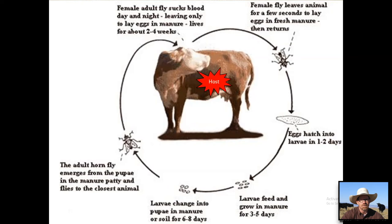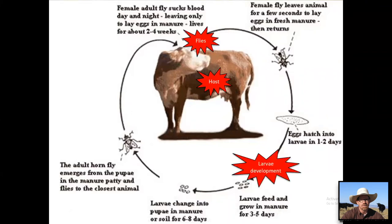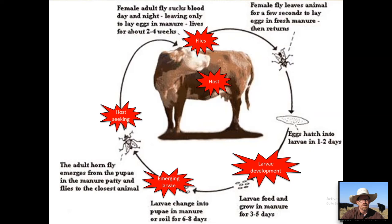Ultimately the adults emerge, fly around, and seek out another cow to take blood meals from. We can disrupt this relationship at different points along the life cycle: we can do things to the host, to flies when they're on the animal, to larvae in the cow pies, when they're emerging from those cow pies, or when they're seeking a host. I'm going to talk about a bunch of strategies that capitalize on all these different places in the life cycle.